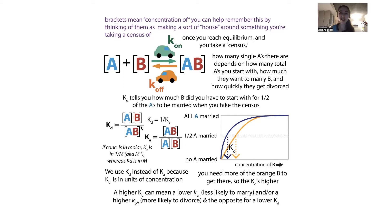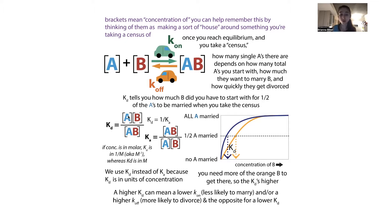It's the inverse of the binding affinity. You might think it would be bound over unbound, but in that case you'd have units of one over molar, which isn't very useful. So we use this Kd, which is in molar units — like micromolar, nanomolar — with the concentrations of the unbound divided by the concentration of the bound.